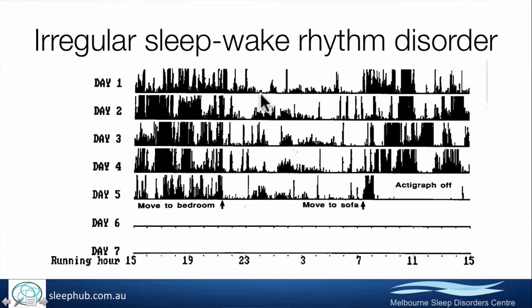The next disorder is irregular sleep-wake rhythm disorder — where, as the name suggests, there's an irregular sleep pattern with bits of sleep and bits of wake all over the place. Most commonly seen in the advanced elderly, particularly people with neurological problems like dementia or stroke, where the regulation of sleep is not as good as it could be. An actigraphy diary of someone with this disorder shows lots of movement during the night, and bits of sleep during the day — all just interspersed across the 24-hour period.